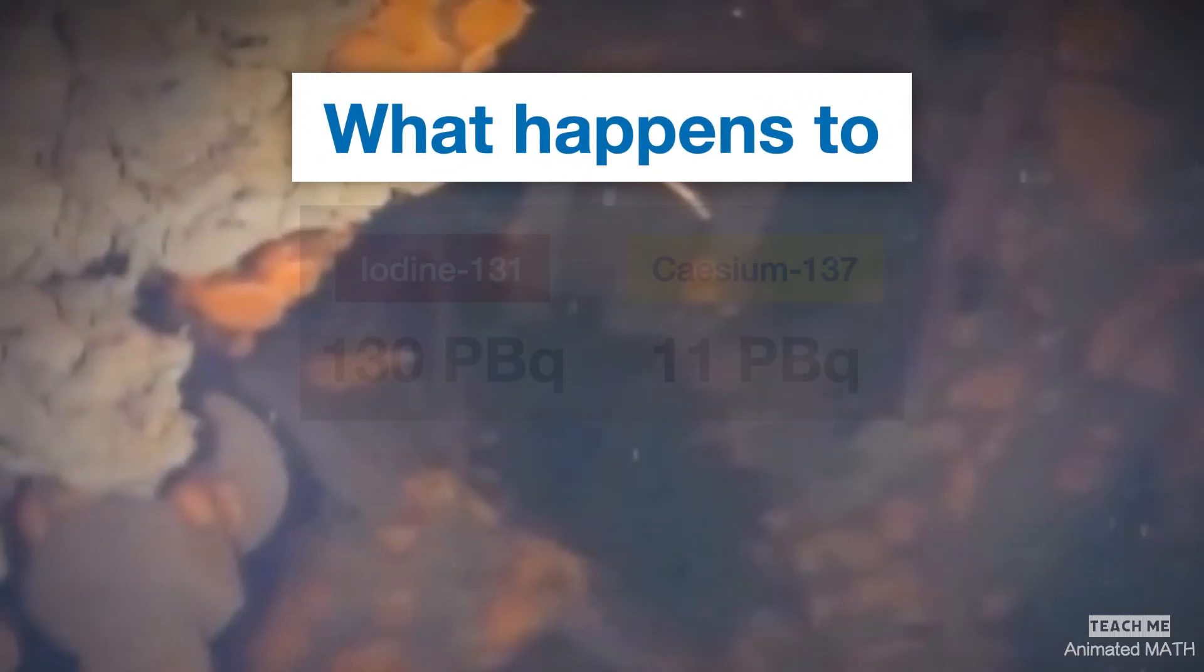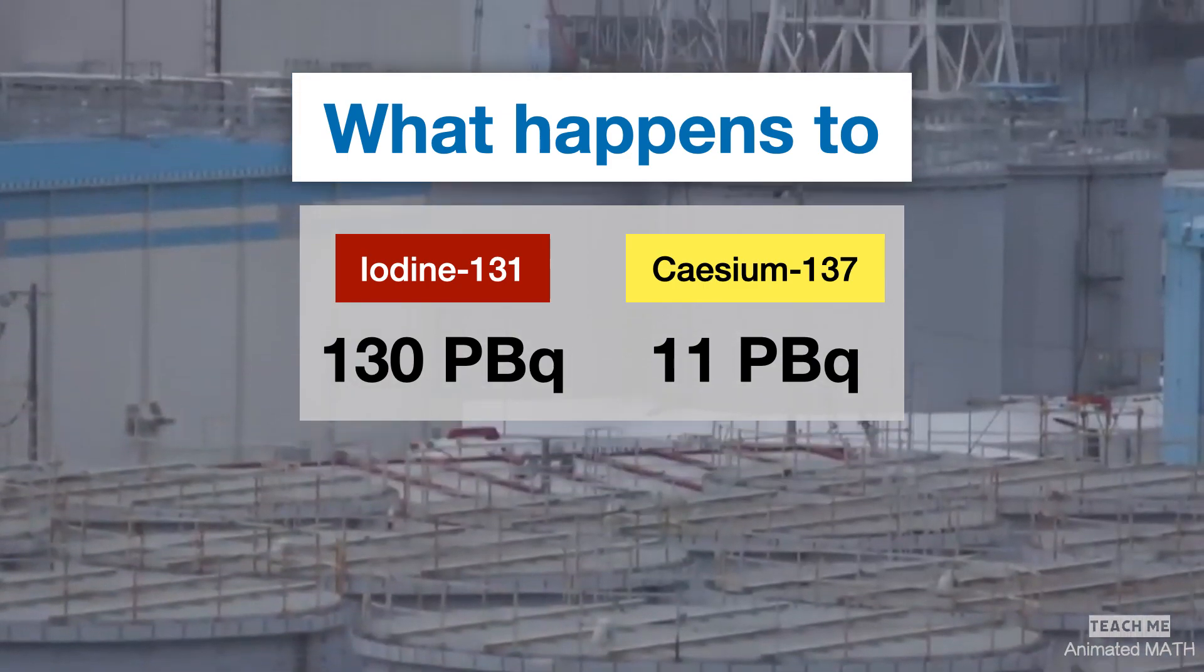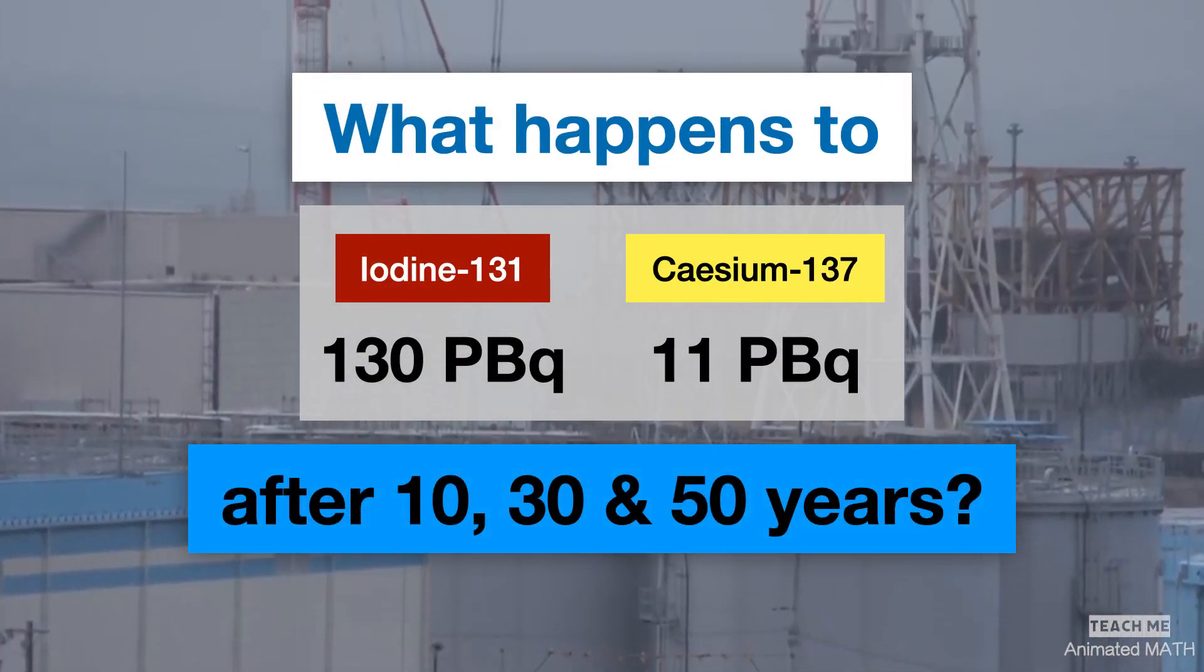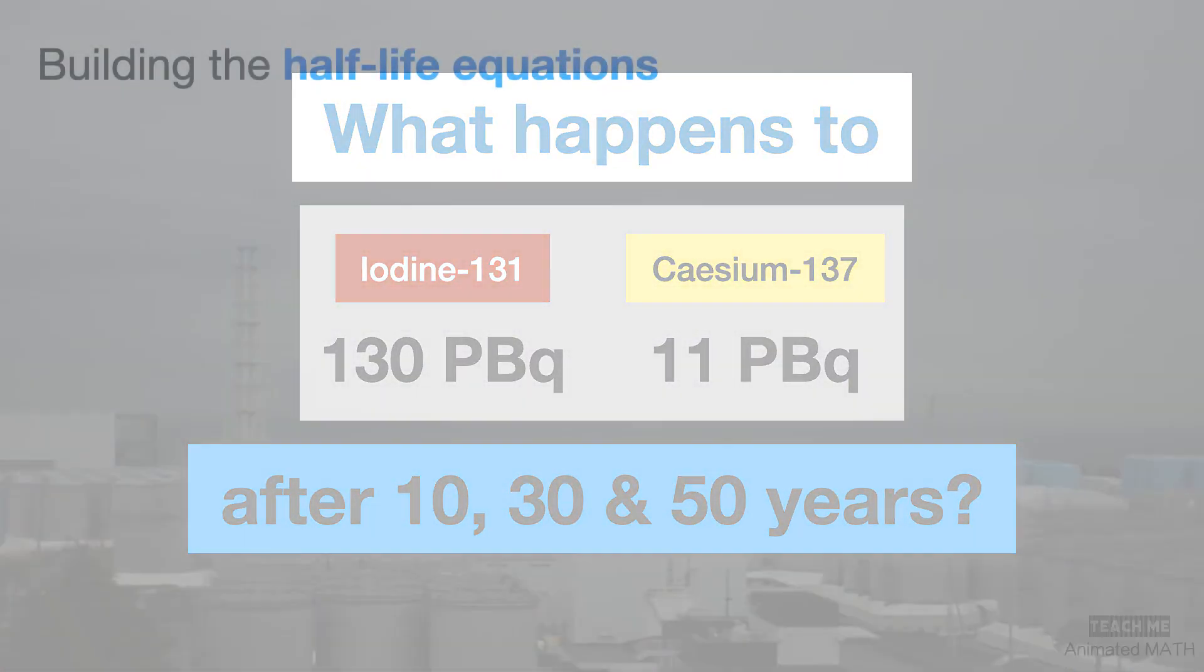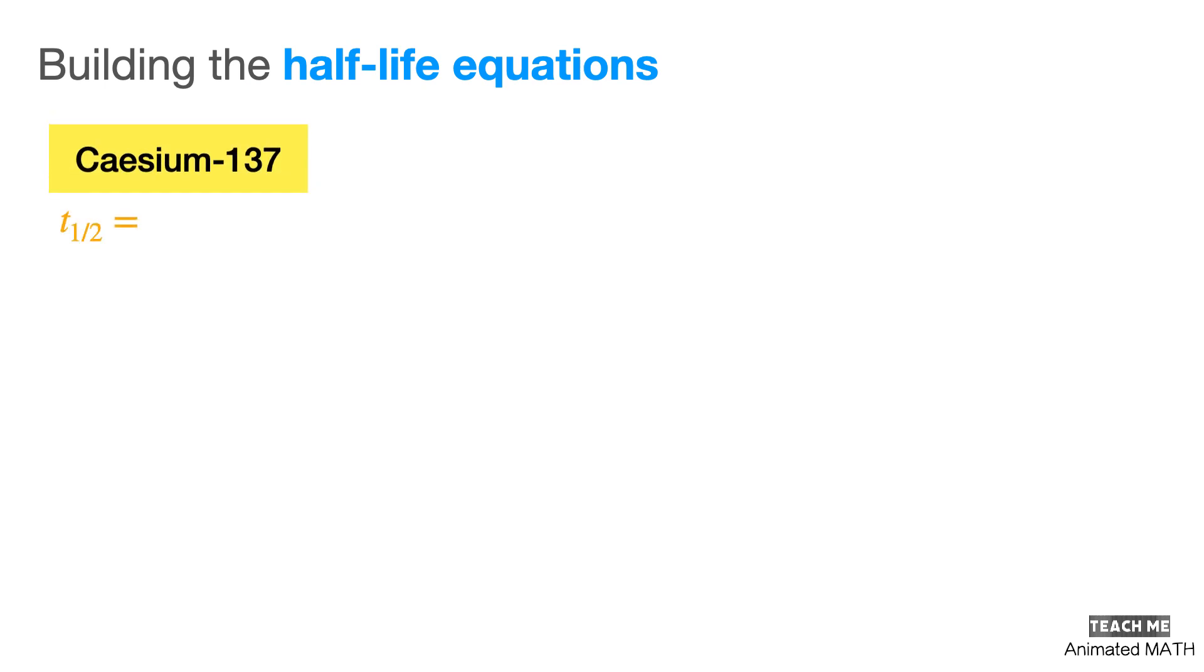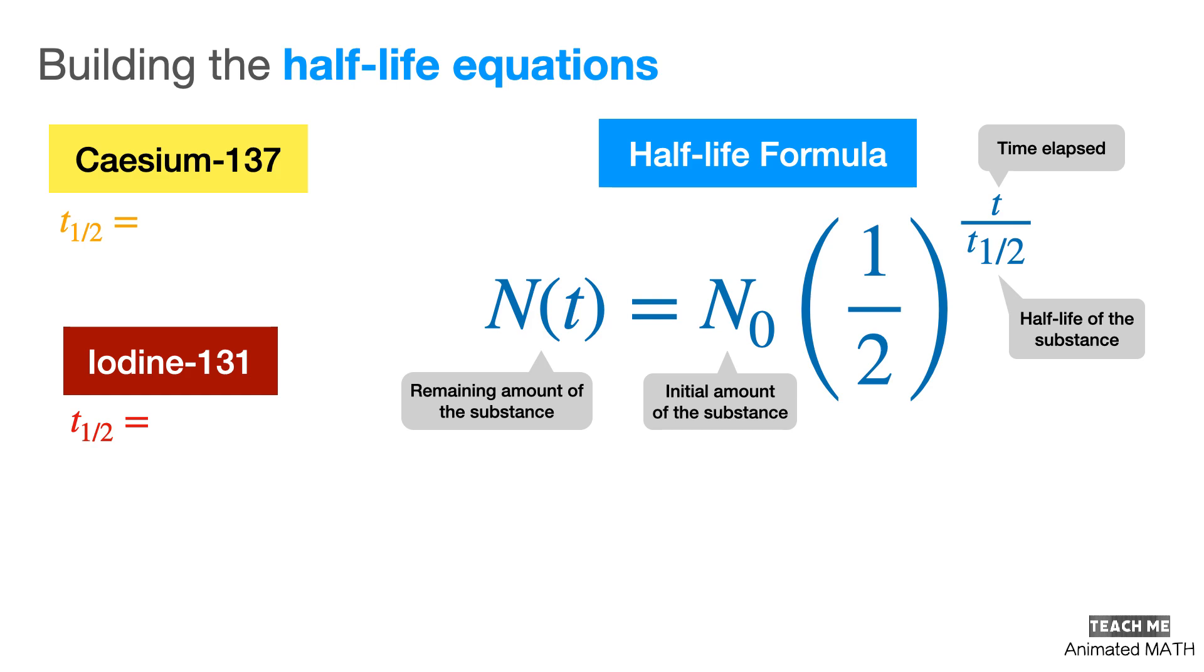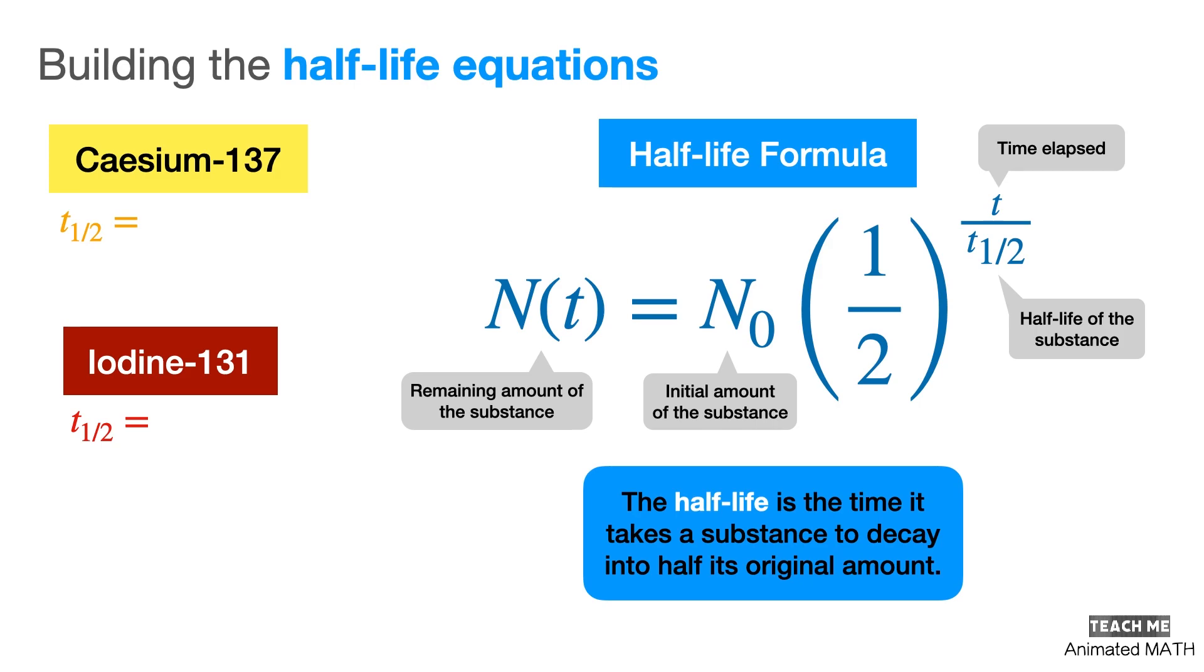So the question now is, what happens to the radioactive isotopes after 10, 30, and 50 years? This can be answered by using the half-life values of the radioactive elements and the half-life formula, which is essentially a decay function. Now the half-life is defined as the time it takes for a radioactive substance to decay into half of its original amount.